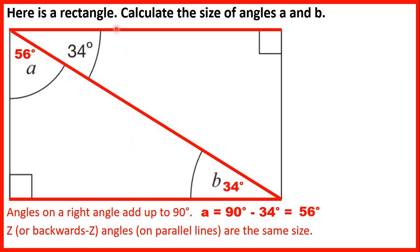Parallel lines are like train tracks — if we extended them they would go on forever. If we have parallel lines and a line crossing them, the angles are the same. We could also work this out another way: if A is 56 and this angle is 90, and there are 180 degrees in a triangle, we could add 56 and 90, then subtract from 180, giving us 34. Because 56 plus 90 plus 34 makes a total of 180.